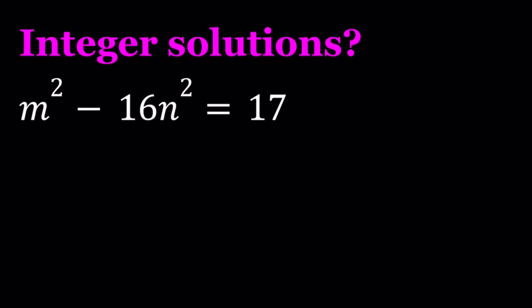So here's what we're going to do. We have m squared, which is a perfect square, and 16n squared, which is another perfect square. So we have a difference of two squares, which is factorable. So we're going to go ahead and factor this as difference of two squares. And if you remember, the difference of two squares formula is given by a squared minus b squared equals a plus b multiplied by a minus b.